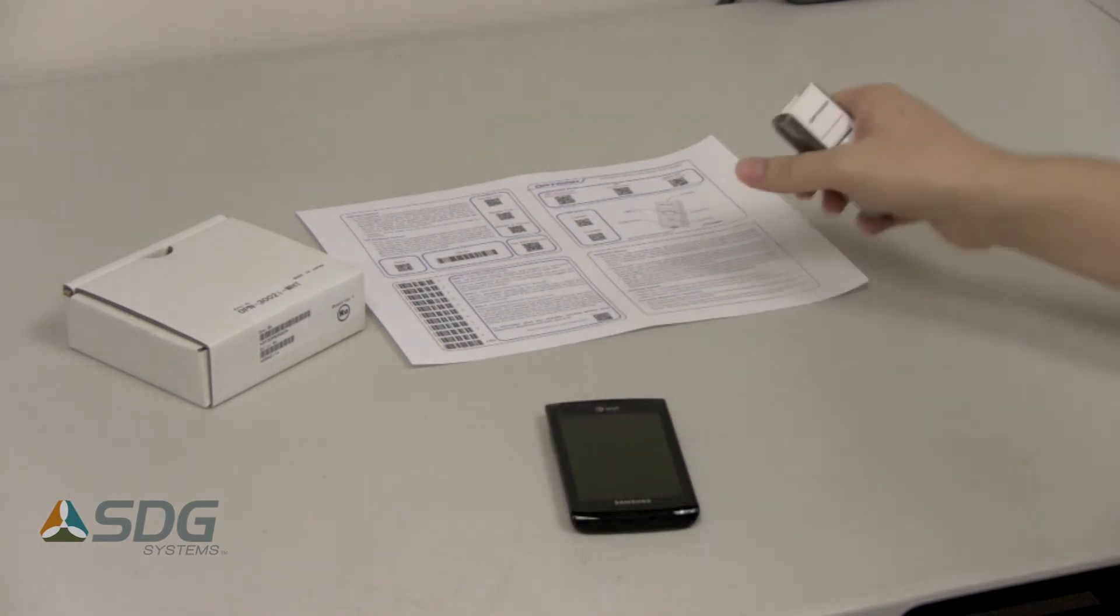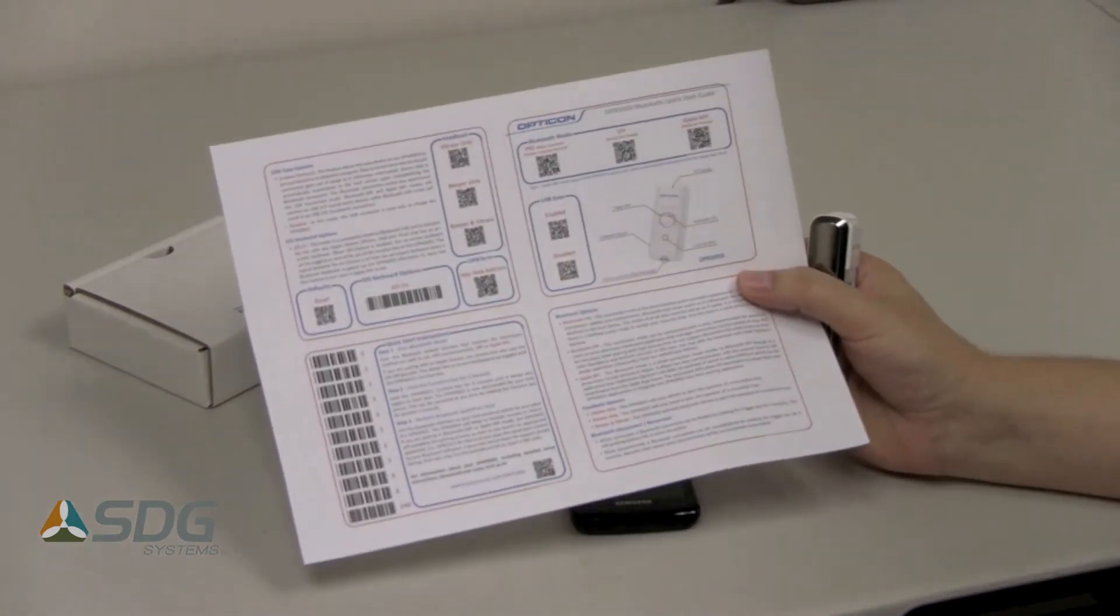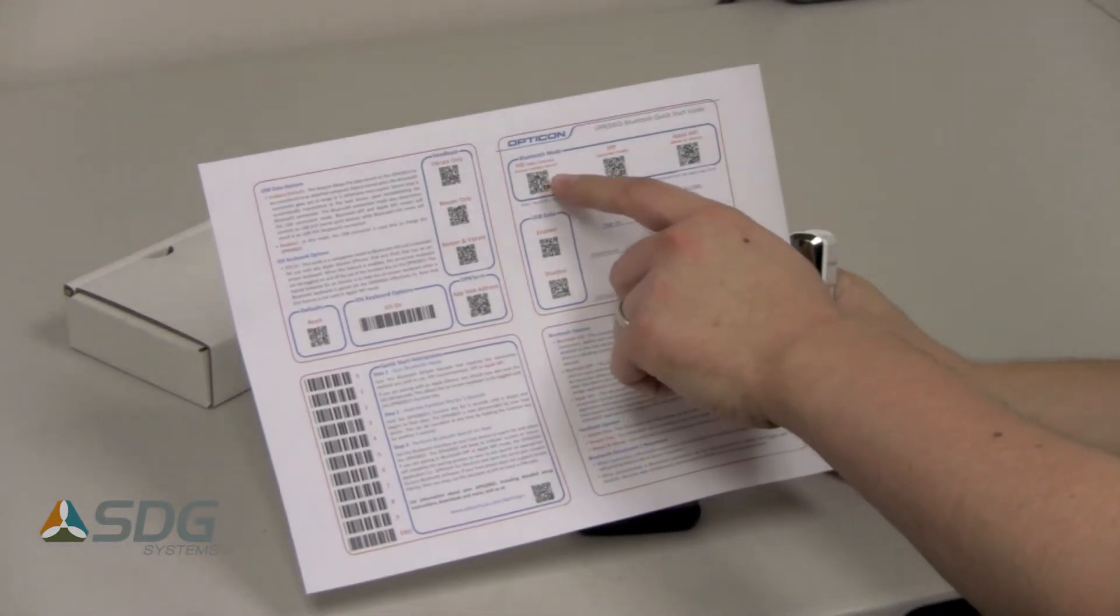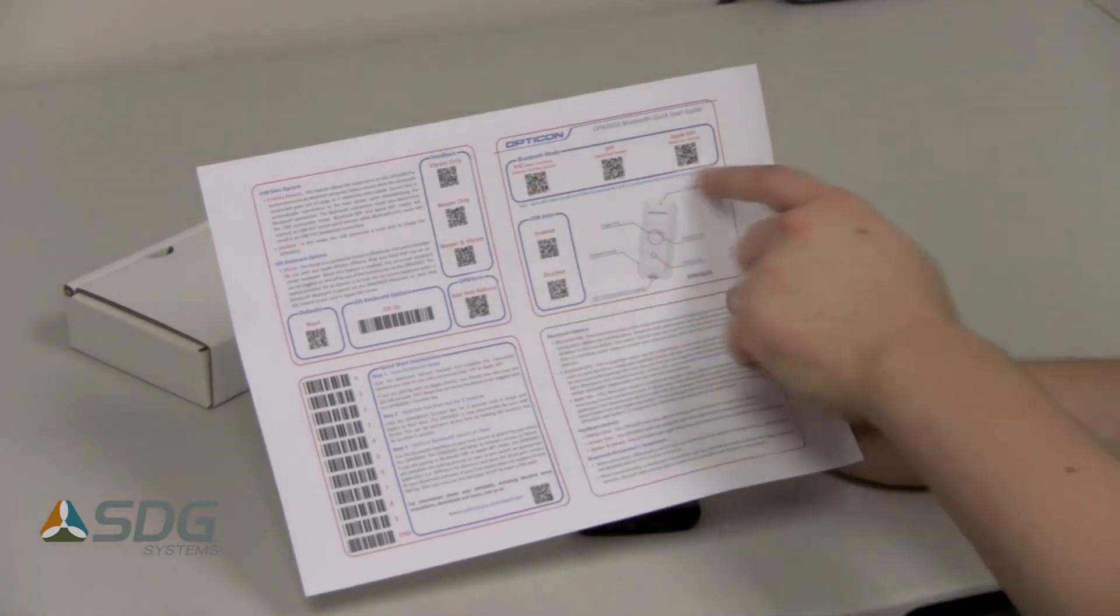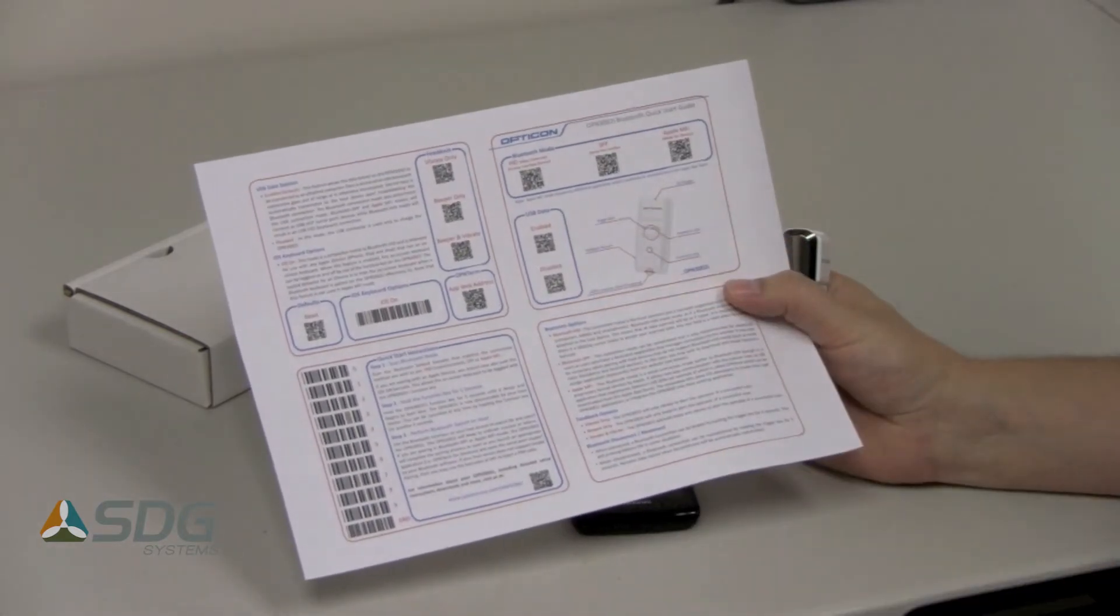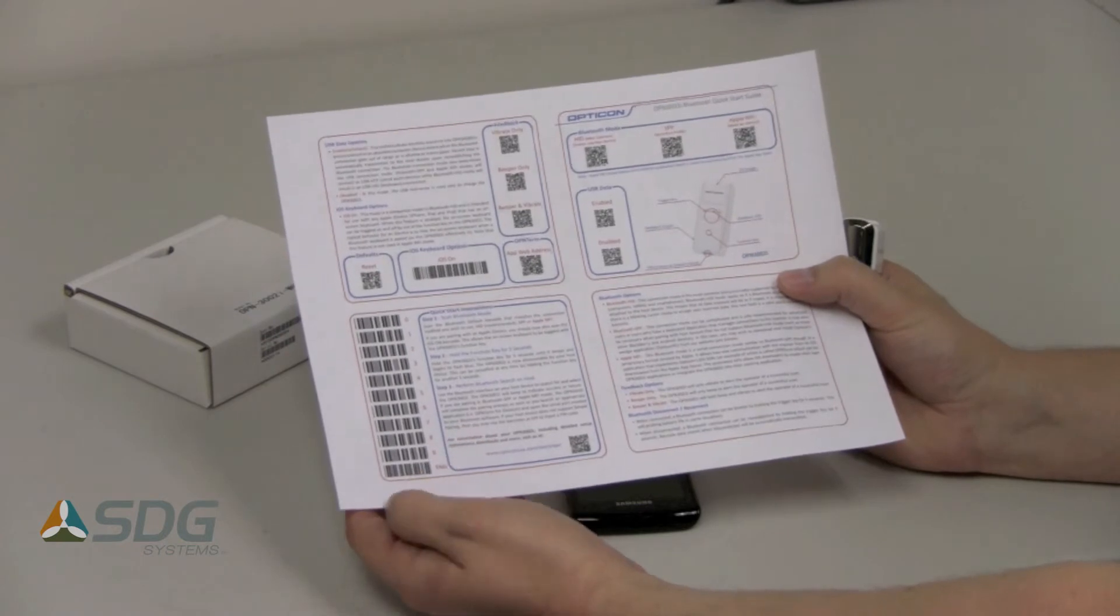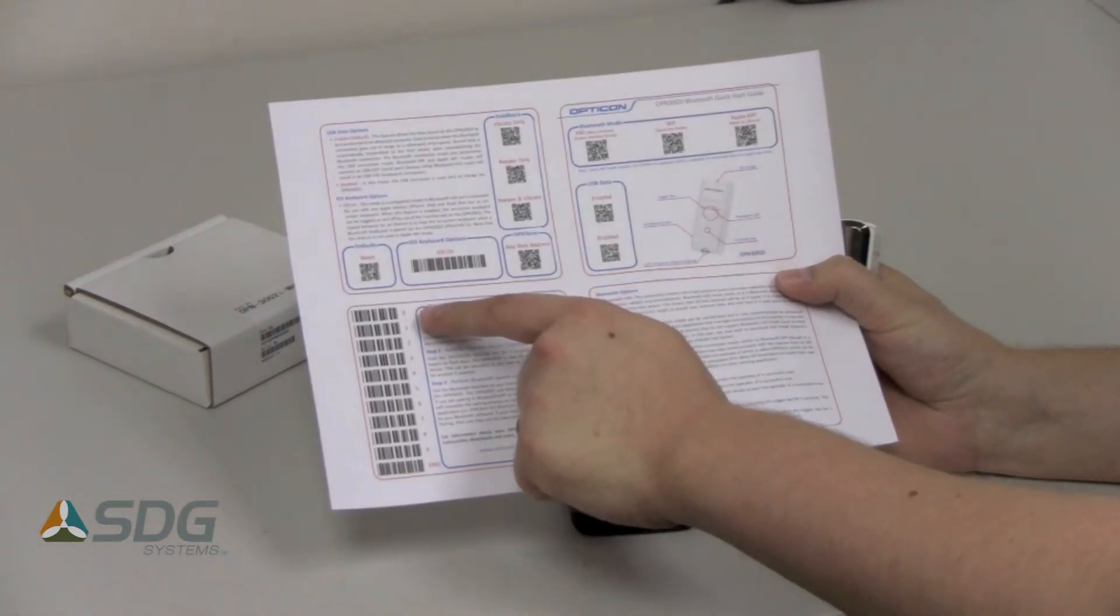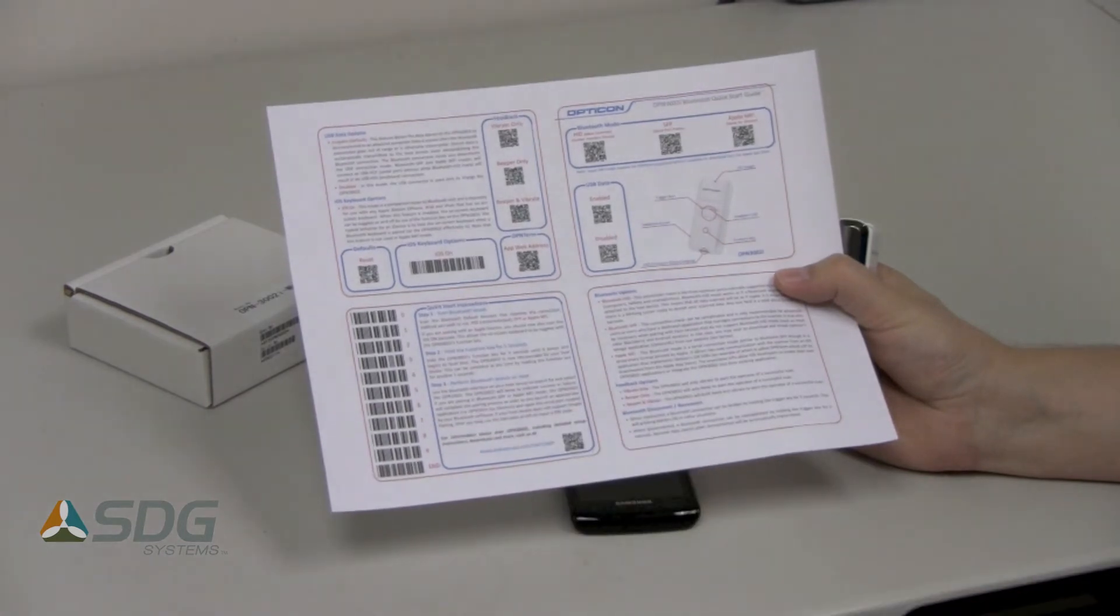Now the quick start guide includes all the barcodes that you may need to get started. We have some Bluetooth mode barcodes we can scan, some options for USB data. If your device did not support simple pairing with no PIN code, then we have the barcodes that you can scan to enter your PIN code.